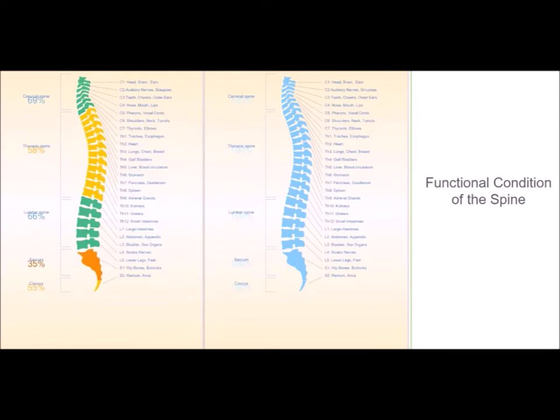Now let's look at the functional condition of the spine. As you can see, there are five parts to the spine. They're all below 70 percent: 69, 58, 66, 35, 55. After using the Cloud for one month, the condition of the spine increased to 100 percent, which is absolute maximum functioning of the spine.